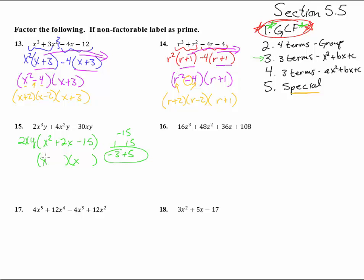So a plus 5 and a minus 3 will do it. And there we go, 2XY times that, and we got it.